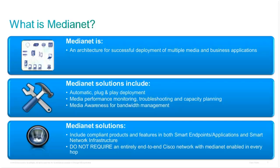When it comes to MediaNet, it is not a product — it's not a box you would go buy. Think of it as a foundational architecture that has elements of QoS, monitoring, deployment best practices. We've actually published these best practices on CCO. If you do a search for solution readiness design guides and MediaNet, you'll find a number of design guides on how to design a MediaNet QoS network. The three main verticals within MediaNet are: accelerating automatic plug-and-play to make application deployment and onboarding faster; media monitoring for fault detection and isolation; and media awareness for better application visibility and policy.